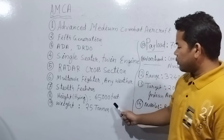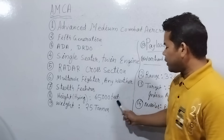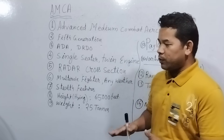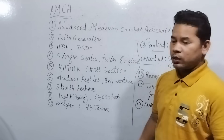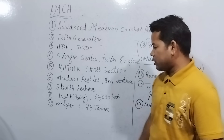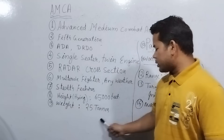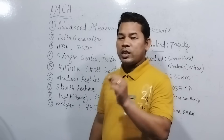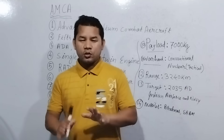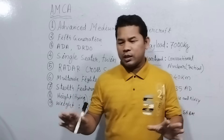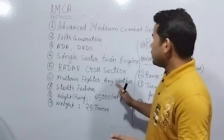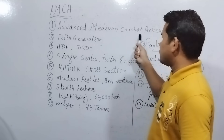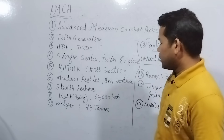The AMCA can operate at 65,000 feet altitude, which equals 65,000 feet per kilometer of service ceiling. The aircraft weighs approximately 25 tons — that is 25,000 kilograms — making it a very large, heavy multi-role aircraft with medium combat range.